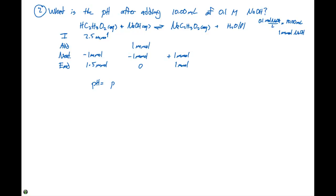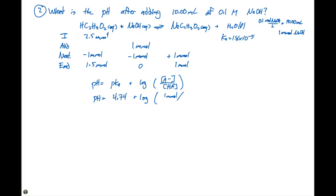We can now use the Henderson-Hasselbalch equation: pH = pKa + log([A⁻]/[HA]). The pKa for acetic acid is 4.74, since Ka = 1.8 × 10⁻⁵. So pH = 4.74 + log of (1 millimole divided by 35.00 mL) divided by (1.5 millimoles divided by 35.00 mL). The volumes cancel out, giving us a pH of 4.56.